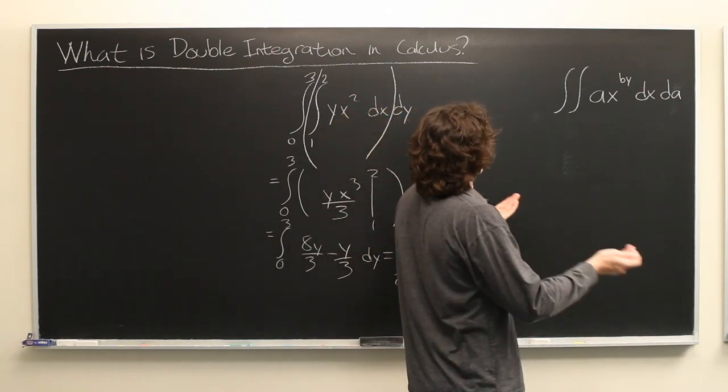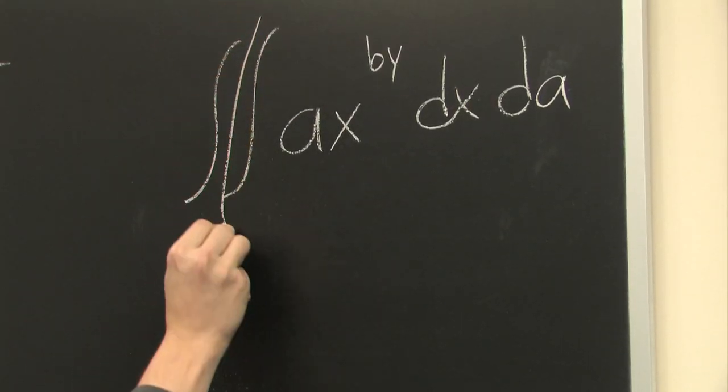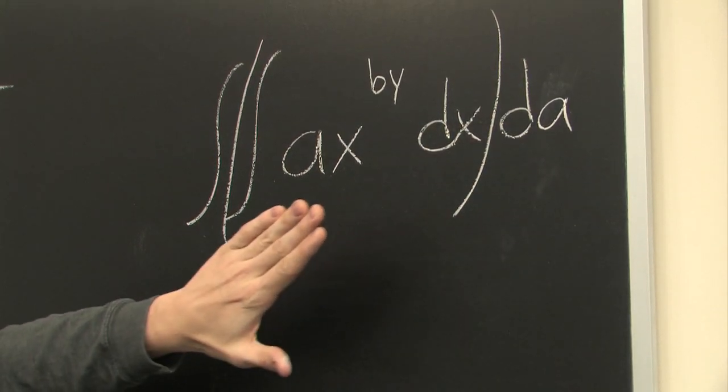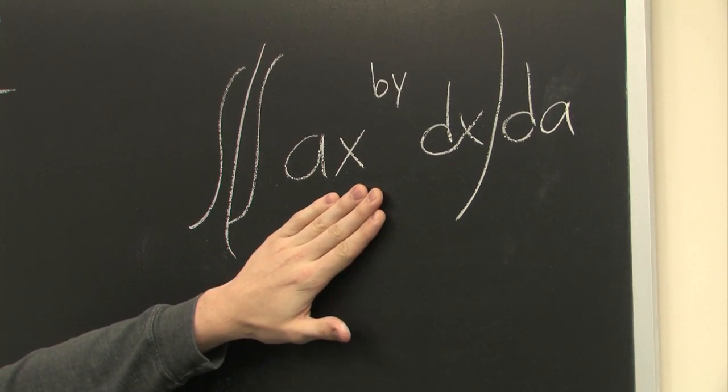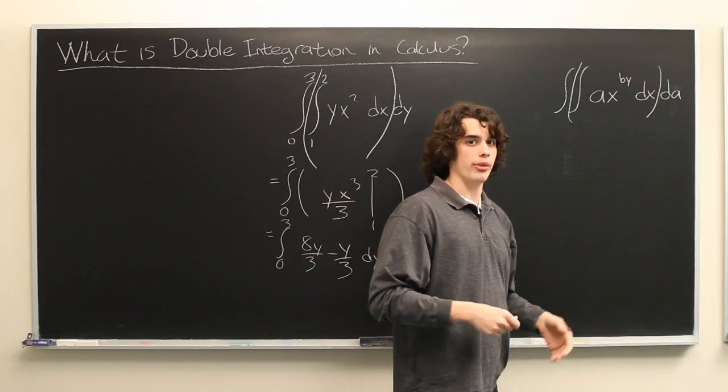Okay. But we can do essentially the same trick that we have before. Just draw parentheses, make it easier. So we'll compute this integral. Whatever result we get, we'll plug it into the outside integral and then compute that.